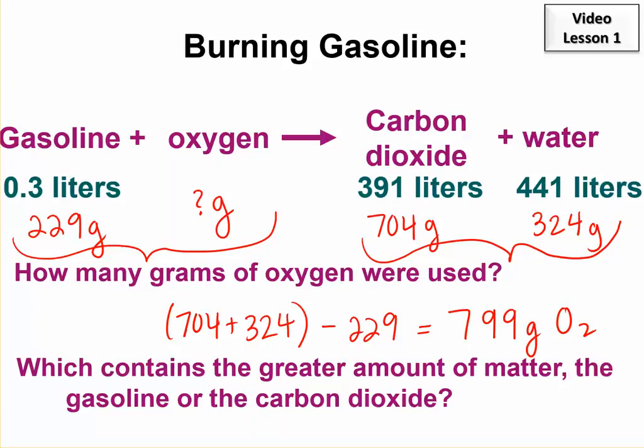We don't have to do any fancy stoichiometry or molar mass or things we're going to do later in the class. That's simple arithmetic. Okay, so which contains the greater amount of matter—the gasoline or the carbon dioxide? So I'm comparing gasoline and carbon dioxide, which one has the most matter. When I want to measure matter, the quantity of matter, I look only at mass. It doesn't matter how many liters. What matters is mass. So there's actually more carbon dioxide because there's more grams.